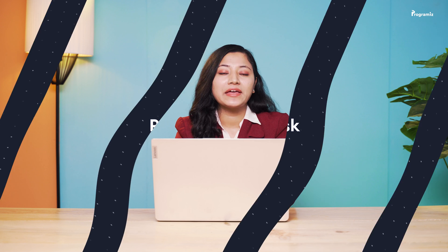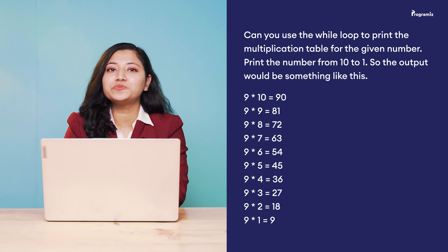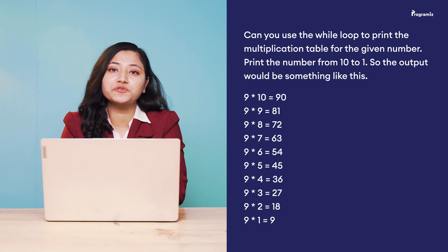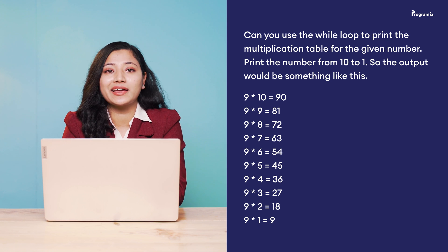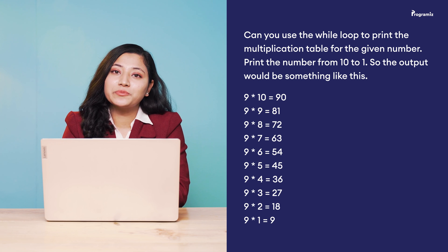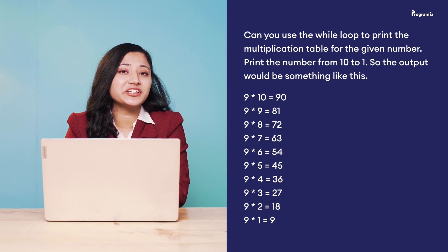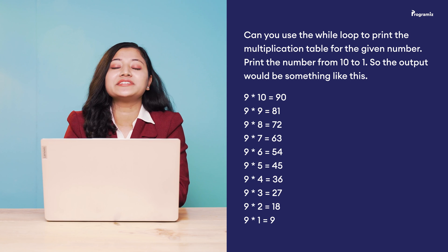Since the working of the do-while loop is similar to that of the while loop, we can use it to print a multiplication table. Go ahead and print the multiplication table like before using a do-while loop. To revise what we've learned, here is a programming task for you — can you use the while loop to print the multiplication table for a given number, but this time print the numbers from 10 to 1? Try the program and comment your code below. You'll find the answers in our GitHub repository. I'll put the link in the video description.